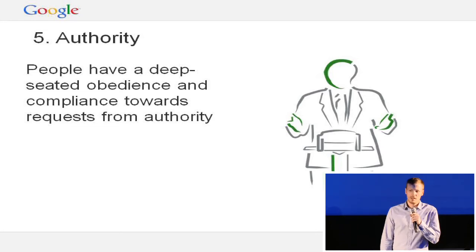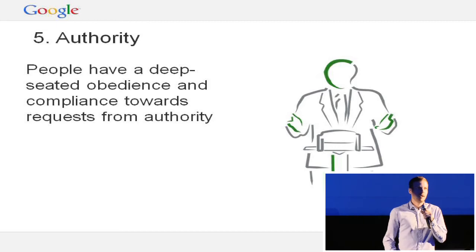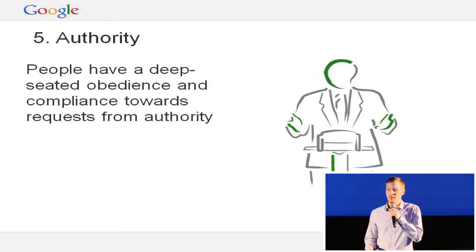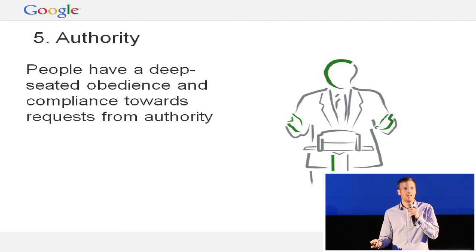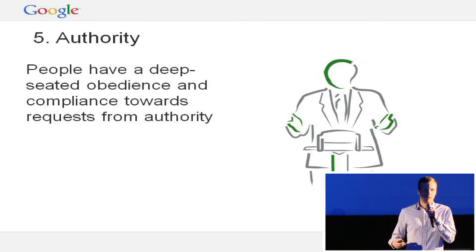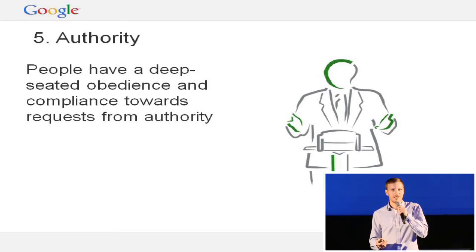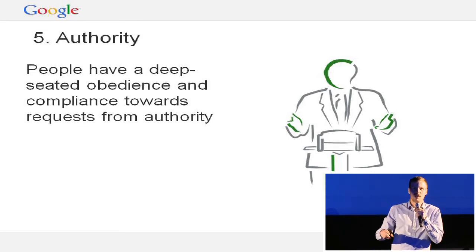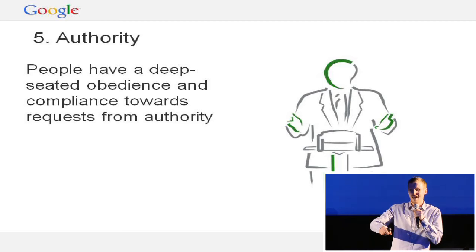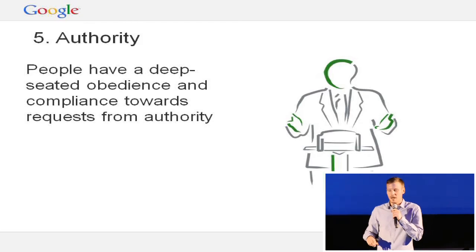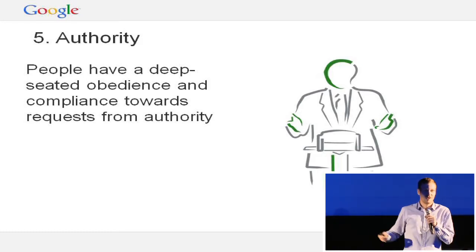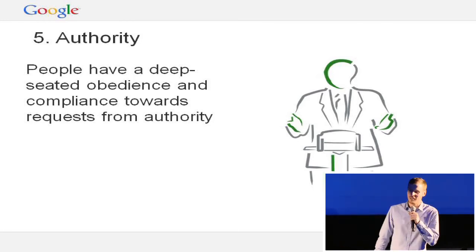Authority is the fifth principle — fairly straightforward. We basically listen to people who we believe are experts in their field. There was a very famous social experiment done in the 70s on this called Milgram's Experiment. They got members of the public to come into a hospital, where one person sat in a chair and the other had to ask them questions. If they got the question wrong, the person asking would administer a small shock. A doctor in a white coat doing the experiment would say 'higher voltage,' and people kept doing it because someone with authority was telling them to. Check it out on YouTube — it's very interesting.